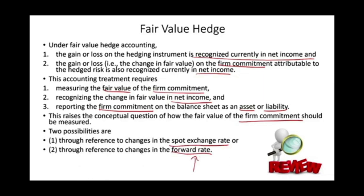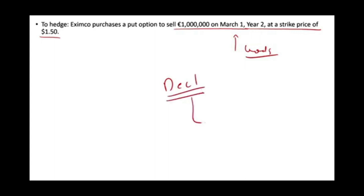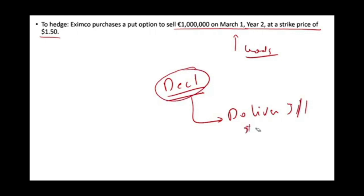In the prior example we used the forward rate; in this example we'll use the spot rate. Eximo purchased a put option to sell 1 million euros on March 1st, Year 2, at a strike price of $1.50. The company received an order on December 1st, accepted it, and will deliver goods on March 1st — receiving 1 million euros at delivery. They made the firm commitment on December 1st, but since they haven't delivered yet, they don't have a receivable. This is an unrecognized foreign currency commitment.